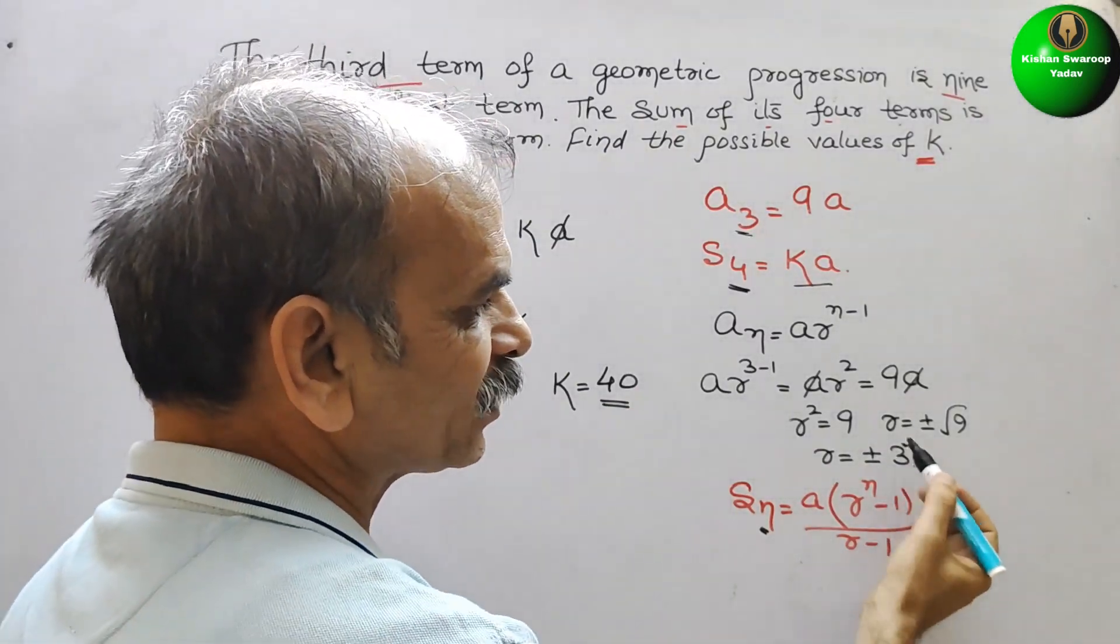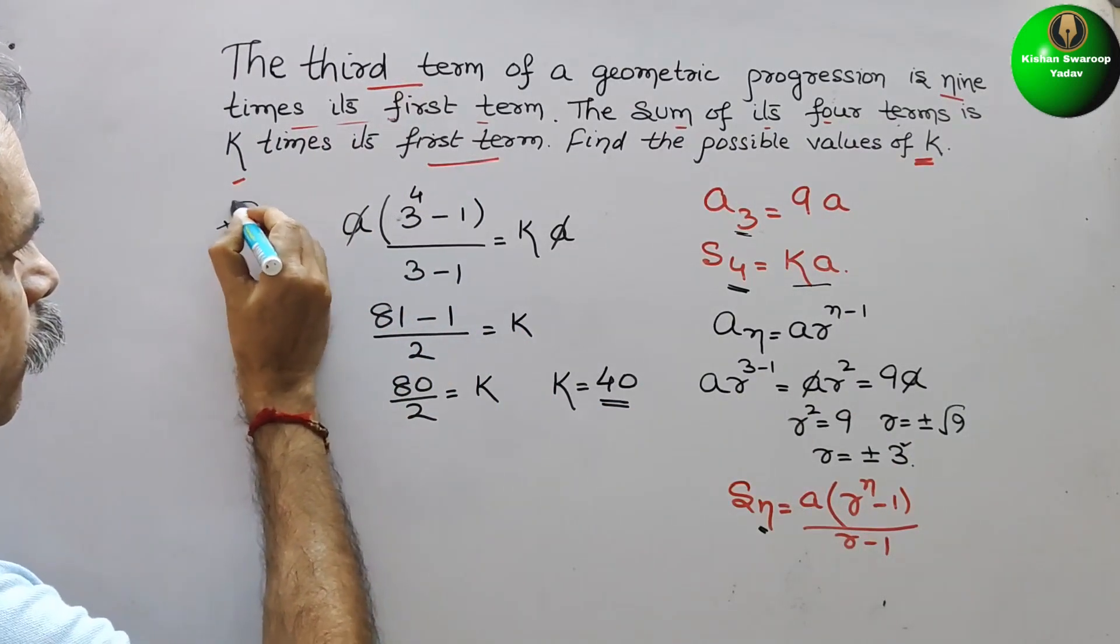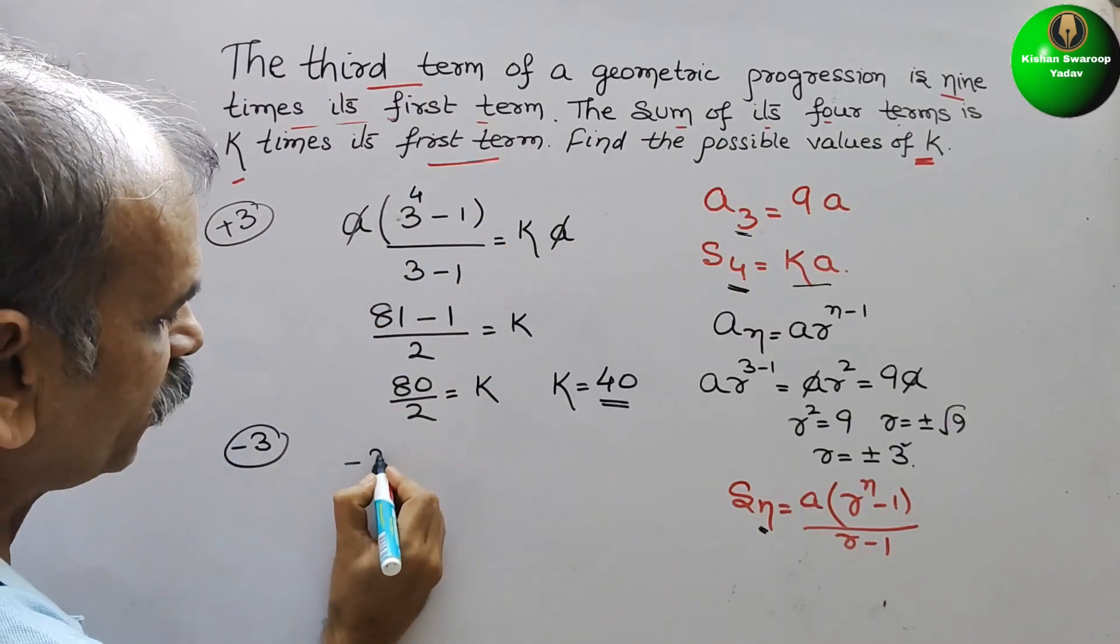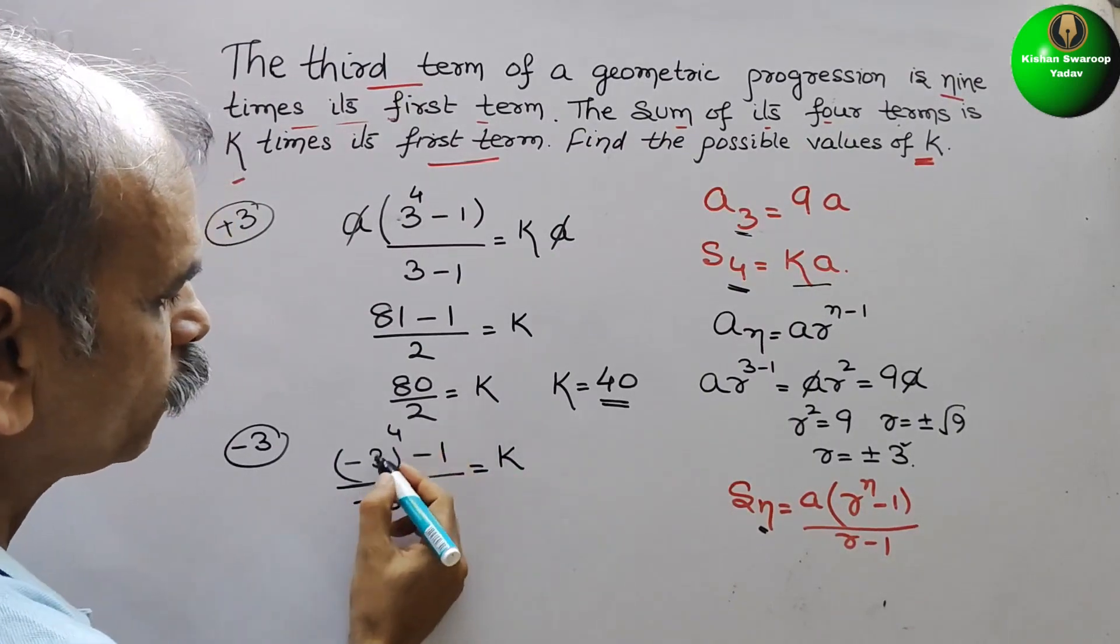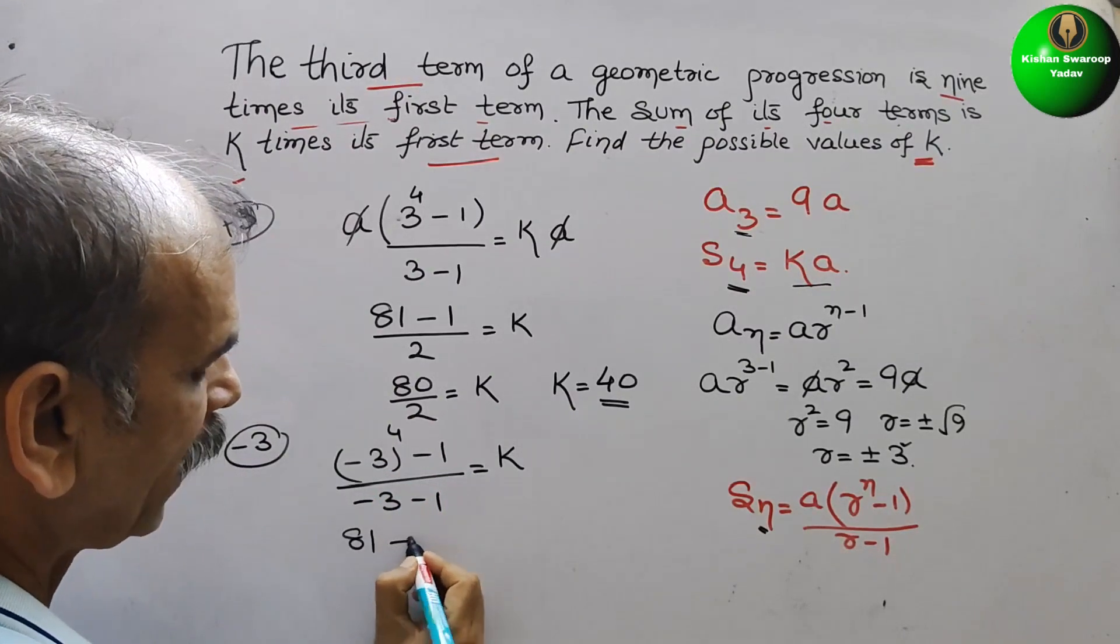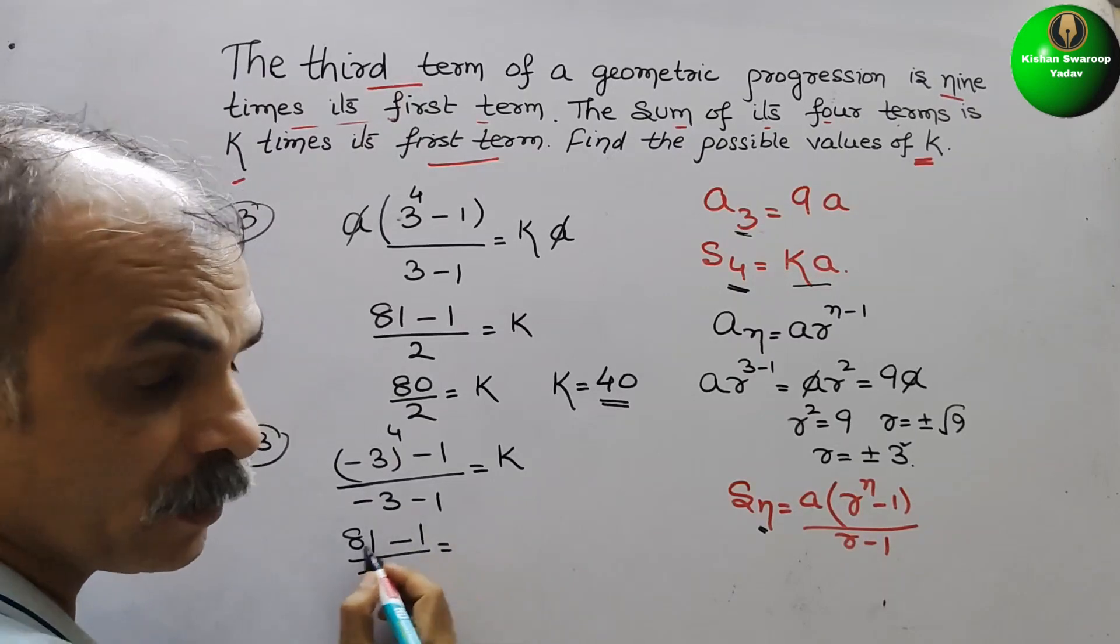Now we will take minus 3. This is for plus 3. And now we will take minus 3. So here we will get what? Minus 3 to the power of 4 minus 1 by minus 3 minus 1 is equal to k. So this value is again 81 only. Minus 1 by minus 4. That is equal to, how much it is? And here we can write k.